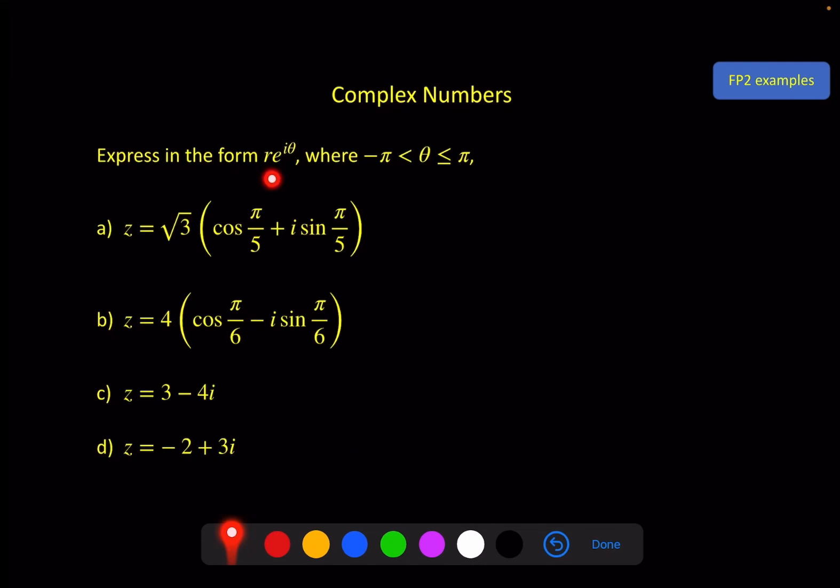Express in the form r e to the iθ, where theta is going to be the principal argument, these four things here. So the first one's really easy because we can see it's modulus argument form. r is this, theta is this, we just write it in this format. So we can go straight away from that to root 3, e to the iπ over 5.